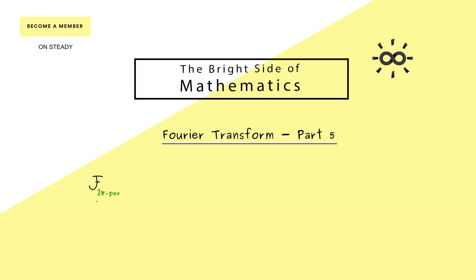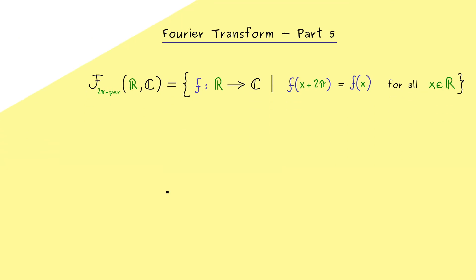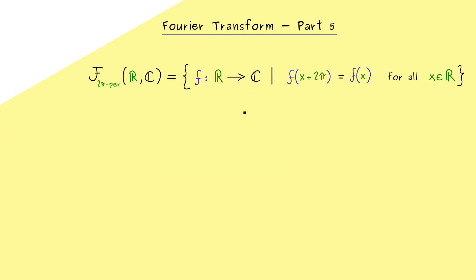Let's immediately start by recalling our set of functions that are 2π periodic. They should be defined on the real number line, but the output can be a complex number. More precisely, this means we consider functions f from R to C with the property that the output doesn't change if we shift the input by 2π. These functions are the ones we want to approximate with cosine and sine functions, or more concretely with the trigonometric polynomials.